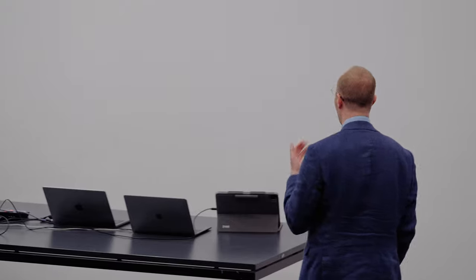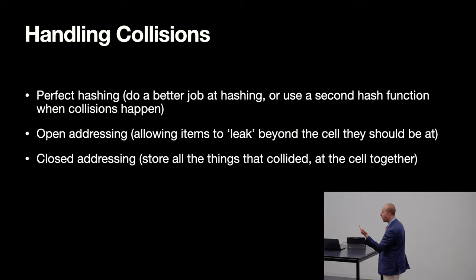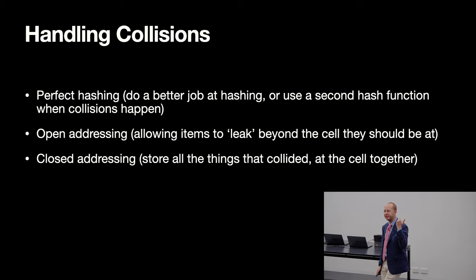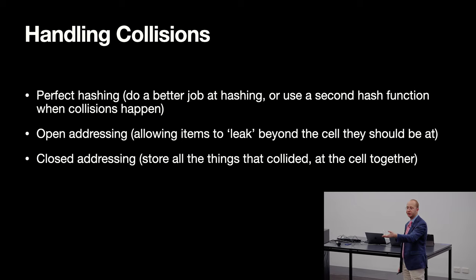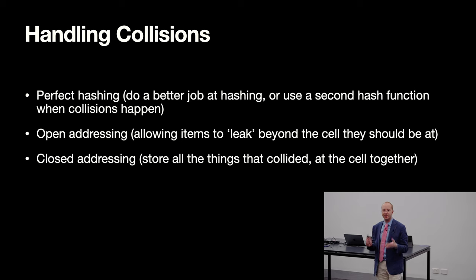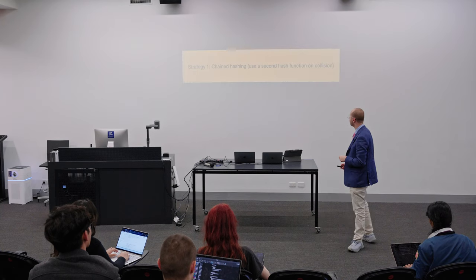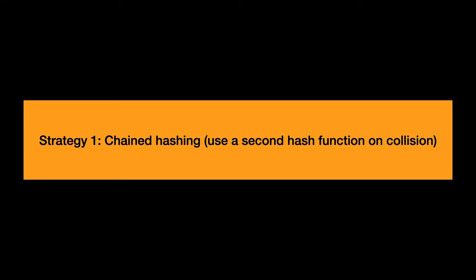So how do we resolve hash collisions? We had our three strategies: try and make a better hash function; open addressing, which allows items to leak beyond the initially indicated insertion place; and closed addressing, which finds some way of storing multiple things in the same place in the array. Strategy one is what we're going to call chained hashing, which is to use a second hash function every time we get a collision.